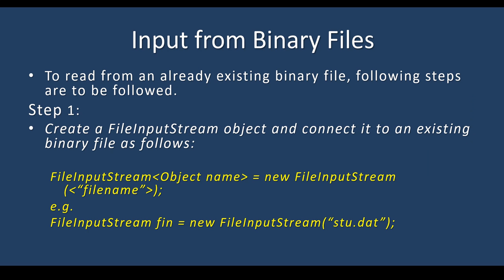The file should already be existing. If the file is not existing, you will get an exception error. Step 1: create a FileInputStream object and connect it to an existing binary file. In the previous video, we used FileOutputStream for output to the binary file. Here, you are going to use FileInputStream — that is the only difference. FileInputStream object name equals new FileInputStream and the file name.